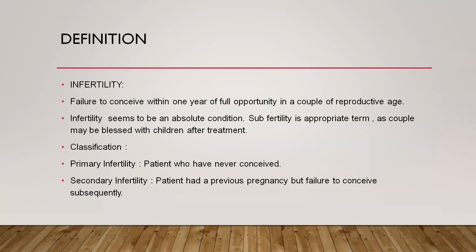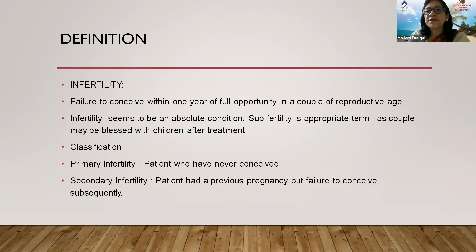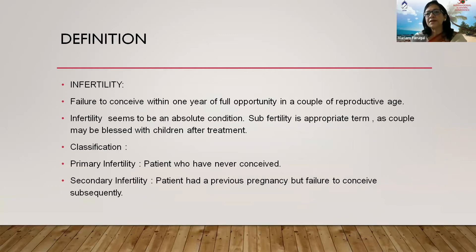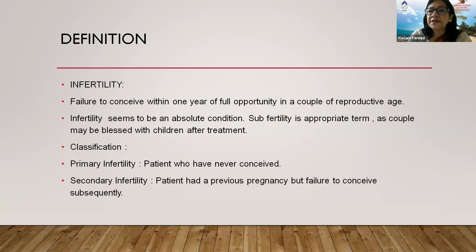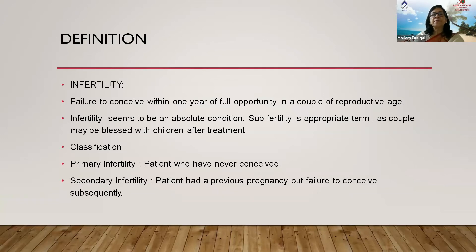By definition, infertility is the failure to conceive within one year of full opportunity in a couple of reproductive age. Infertility seems to be an absolute condition, but we now use the term subfertility, which is more appropriate, as the infertile couple may be blessed with children later on. We classify subfertility as primary infertility, where the couple has never conceived, or secondary infertility, where the patient has had a previous pregnancy but fails to conceive subsequently.